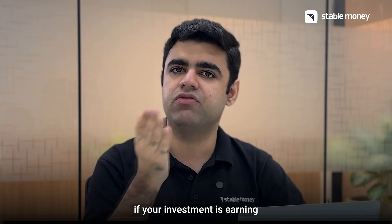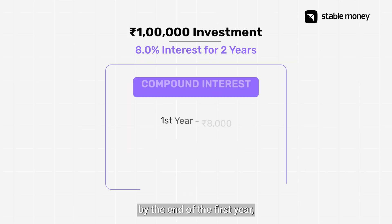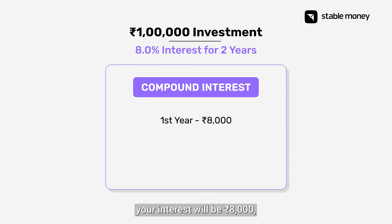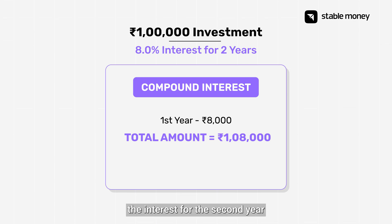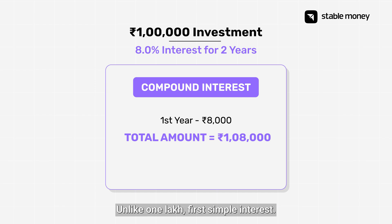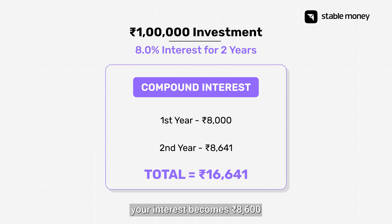So your total interest after 2 years becomes 16,000 rupees. Now let's see what happens if your investment is earning compound interest. By the end of the first year, your interest will be 8,000 rupees, which makes your total amount 1 lakh 8,000 rupees. The beauty of compounding is that the interest for the second year is now calculated on this 1 lakh 8,000, unlike 1 lakh for simple interest. So for the second year, your interest becomes 8,600 rupees instead of just 8,000 rupees.